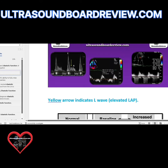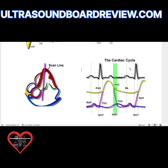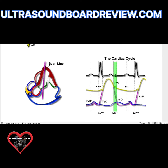Diastolic function has four stages. The first stage is the IVRT, which is the time from when your semilunar valves close to when your atrial ventricular valves open. Your semilunar valves are your pulmonic and aortic valves, and your atrial ventricular valves are your mitral and tricuspid valves. This green area represents the IVRT, or isovolumic relaxation time. During this time period, nothing should be going on.